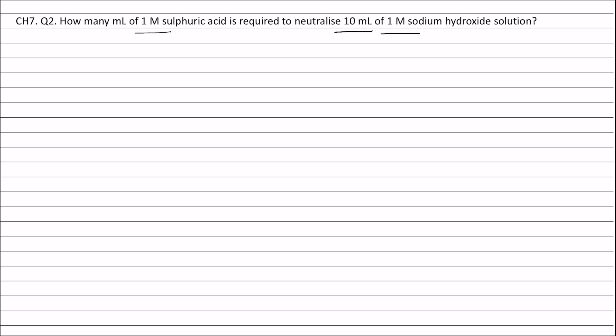The number of equivalents of sulfuric acid will be equal to the number of equivalents of sodium hydroxide. Therefore, we can write N1V1 is equal to N2V2.